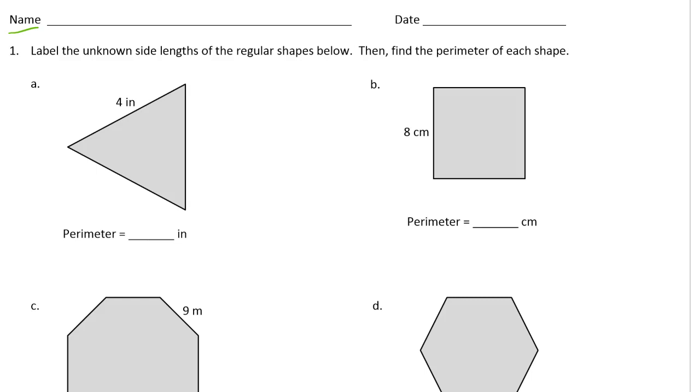Now we're not actually measuring the sides of these shapes. It says right here that these are regular shapes which means that all the sides are equal. So if it says what one is then we know what the rest of them are because they're all the same.